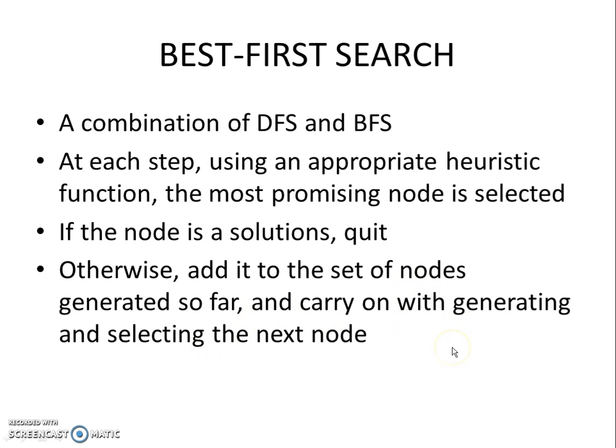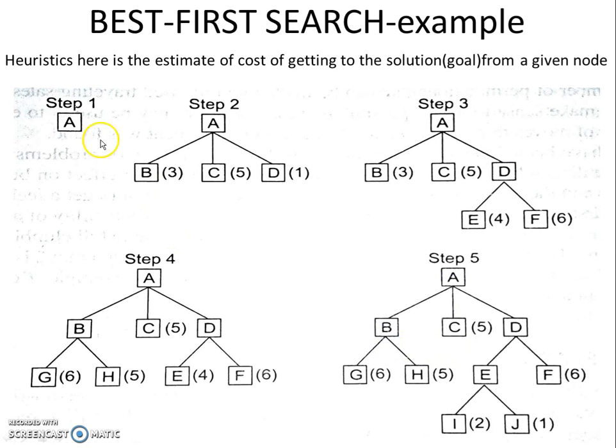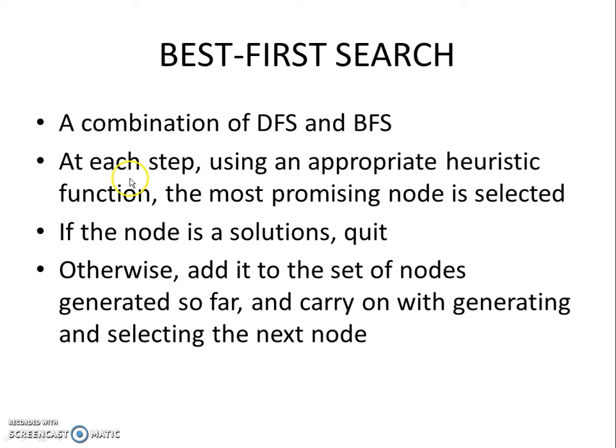You have an example for the best-first search here. This is generated from a search tree. You can consider an automated taxi which wants to move from one location to another and wants to select the lowest cost path. At step one, you are at location A, and what do you do next? You check the algorithm.